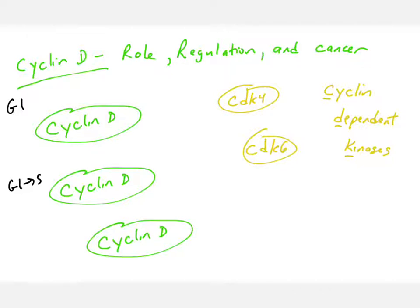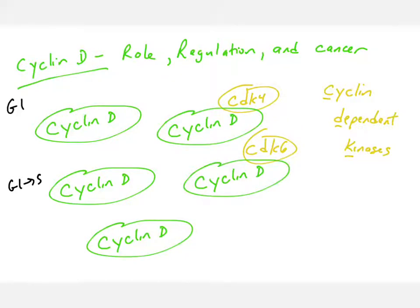CDKs are typically inactive in phases of the cell cycle where their matching partner cyclin is absent. So when cyclin D levels are very low, CDK4 and CDK6 are kinases but they are non-functional. As cyclin D levels rise, cyclin D protein will bind these cyclin-dependent kinases — specifically CDK4 and CDK6 — and when cyclin D binds these kinases, that activates them, allowing them to phosphorylate their substrate.